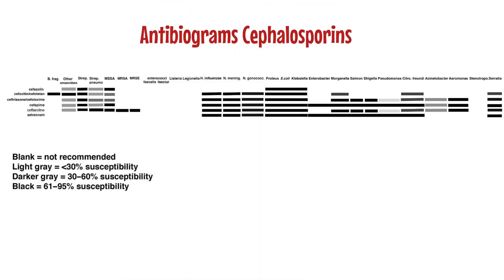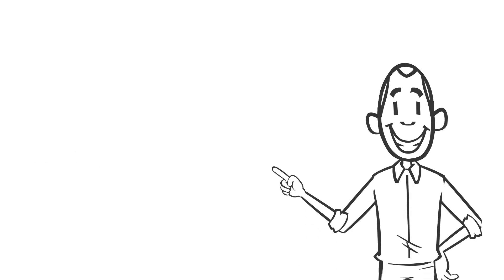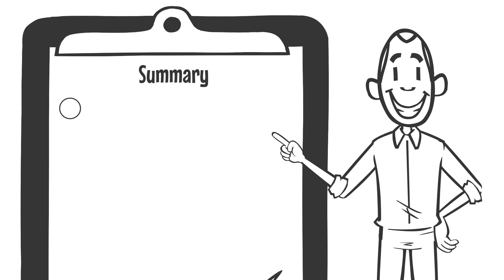Here is the antibiogram for the cephalosporins. As you can see, cefazolin at the top of the chart is a narrow-spectrum antibiotic that is safe and inexpensive — when possible, this antibiotic should be prescribed. Near the bottom is cefepime, showing many dark squares reflecting its very broad spectrum of activity.